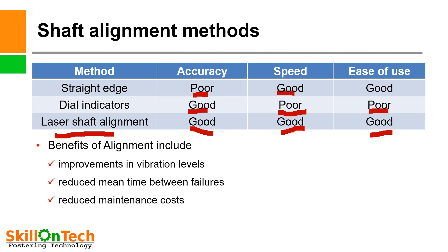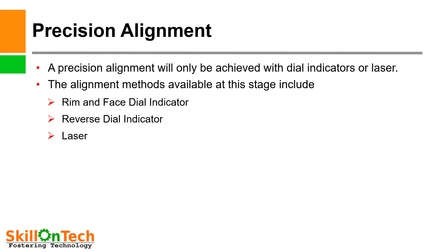Benefits of alignment include improvement in vibration levels, reduced mean time between failures, and reduced maintenance cost. Your alarms with laser shaft alignment will drastically reduce. If your alignment is perfect, then you will find the results of good alignment. Precision alignment will be achieved with dial indicators or laser indicators. The alignment methods available include rim and face dial indicator method, reverse dial indicator method, and laser alignment method.